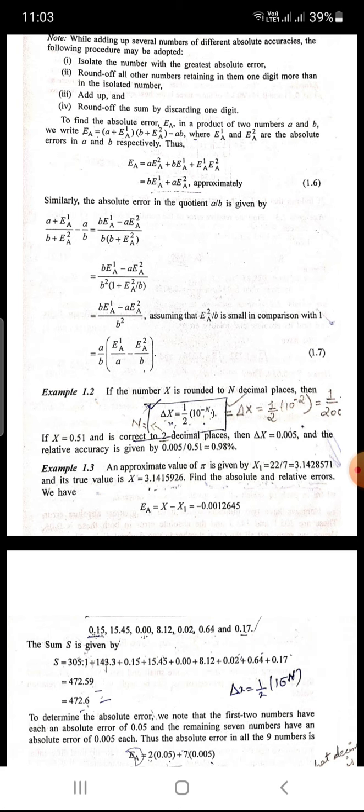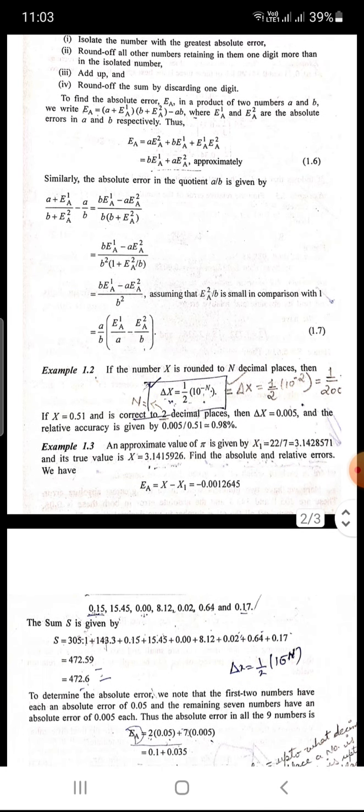Here we have assumed that e2a upon b is small, very small in comparison to one. So this will be equal to a upon b times (e1a upon a minus e2a upon b).